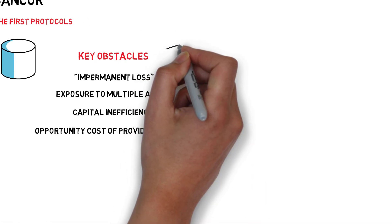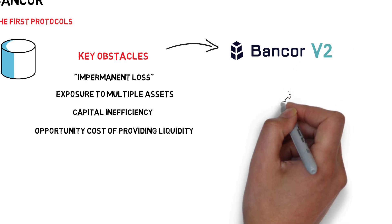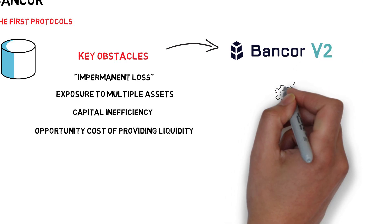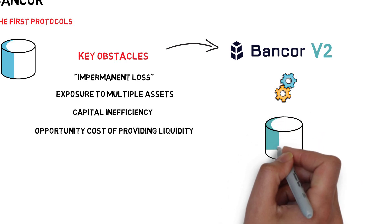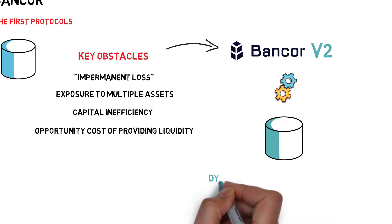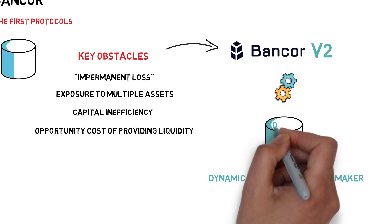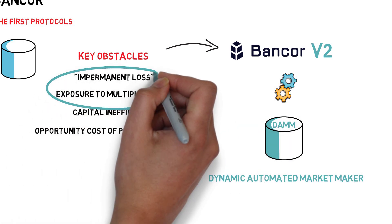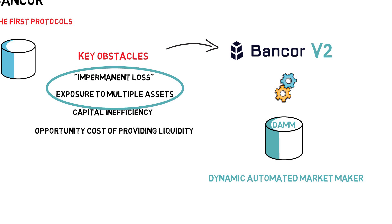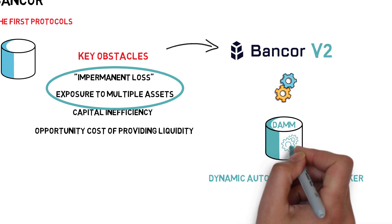To tackle each one of them, Bancor V2 implemented a bunch of new features. The biggest one is the introduction of a new AMM called a Dynamic Automated Market Maker, or DAMM, that addresses the first two obstacles: impermanent loss and exposure to multiple assets.